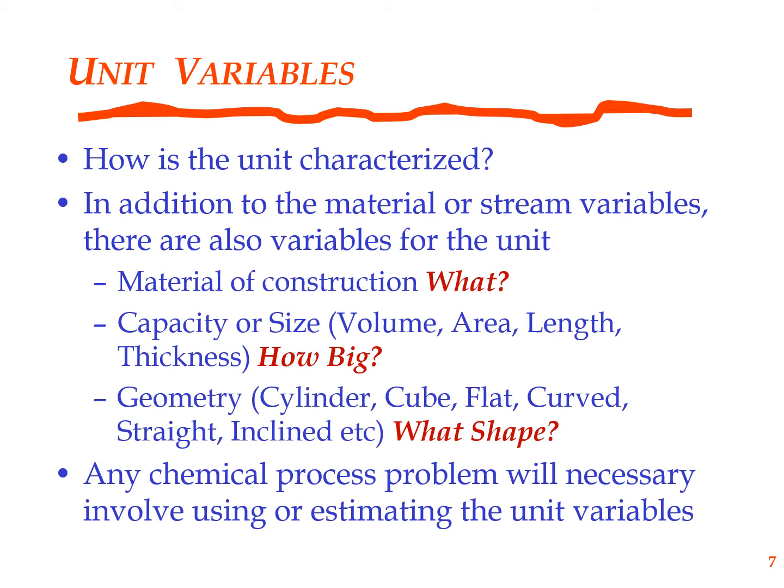Usually the geometry is not an outcome of any model equation, though the shape is going to decide what kind of unit variables go into the model. You generally do not have a model that tells you your heat exchanger has to comprise cylindrical tubes versus annular spheres. There is no model that does that — you have to pre-define the geometry and your model gets developed accordingly. Then you may compare one geometry versus another. Typically, therefore, when you are looking at unit variables, the unit variable you design for is usually the capacity.